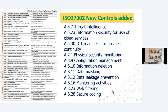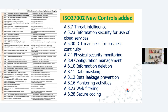The new controls that have been added: under A5 — threat intelligence; then the A5.23 control — information security for use of cloud services; then ICT readiness for business continuity, physical security monitoring, configuration management, information deletion, and other new controls added in 27002. These new controls are very much required in ISMS as the previous 2013 version was silent on these requirements like threat intelligence, cloud services, ICT readiness, and business continuity — although business continuity had one domain, it is now further redefined.